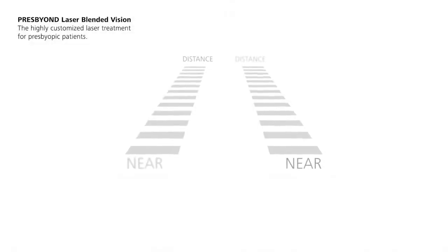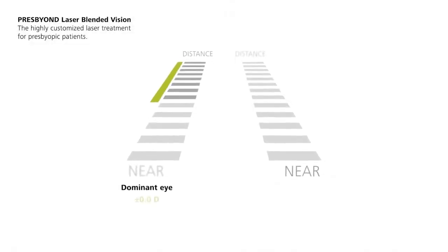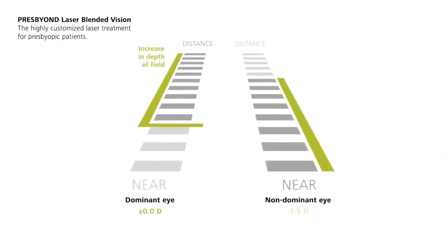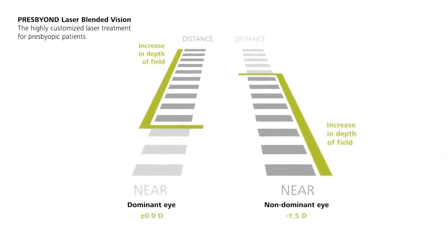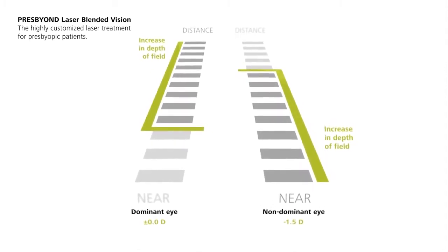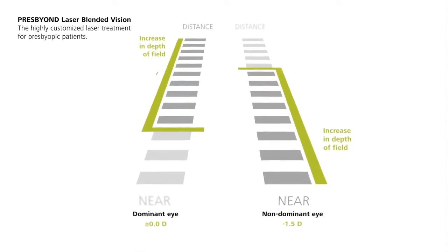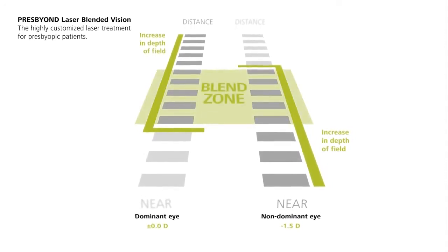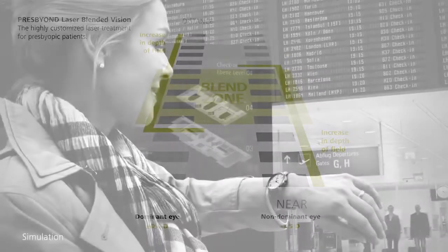With PresBeyond Laser Blended Vision, the dominant eye is corrected for distance vision to almost plano. The non-dominant eye is corrected for near vision close to minus one point five diopter. The depth of field is increased for each eye individually, creating an area of overlap, the unique blend zone, enabling true binocular vision.